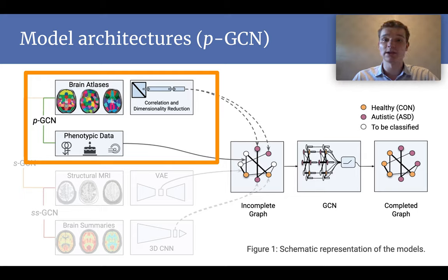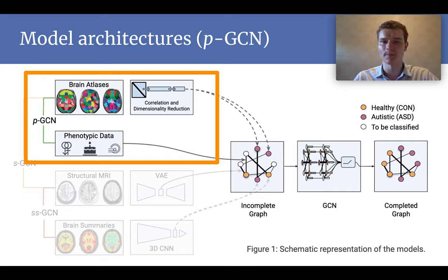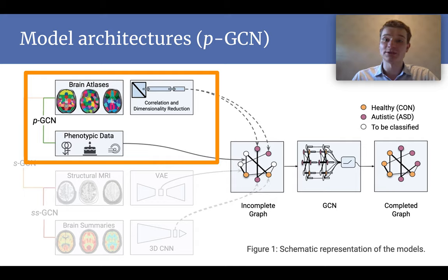The varying time dimension is reduced by creating a similarity matrix of how similar the regions activate over time. When flattening this matrix, you get a small feature vector. However, it's not small enough, and a ridge regressor is used to reduce the dimensionality to just an order of a thousand.